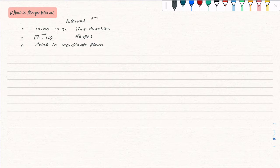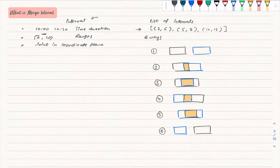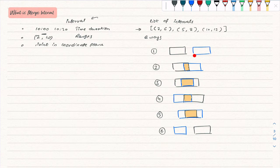Now, given a list of intervals, any two intervals can relate with each other in six different ways. I have illustrated all six ways here. The black line is our first interval and the blue line is our second interval. In the first case, the second interval starts after the end of the first interval. In the second case, the second interval starts in between the start and end of the first interval but ends after it.